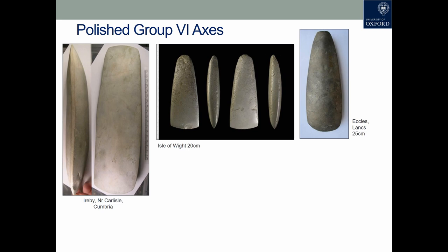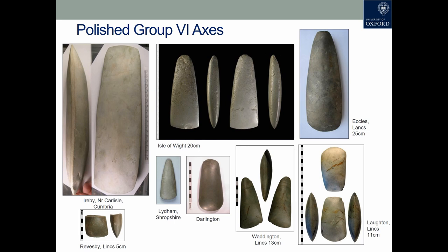Here we see an illustration of the artifacts concerned. I'm showing you some of the well-known large polished examples, and very recent dating evidence shows that the period for production is now understood to be between 4,000 and 3,500 BC in the United Kingdom, which is both earlier than previously thought and also a shorter time span. We also see in the dataset many examples that have much more variability in size and shape, and you can see quite significant differences in the morphology and size of the artifacts.